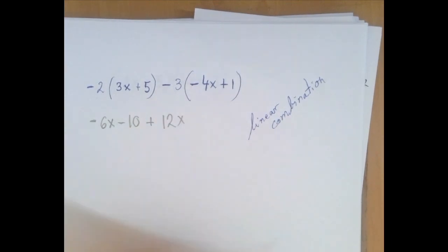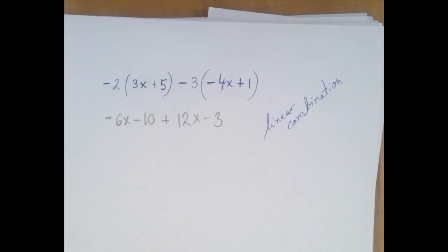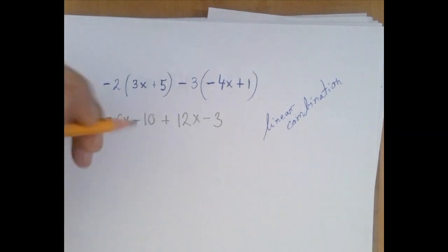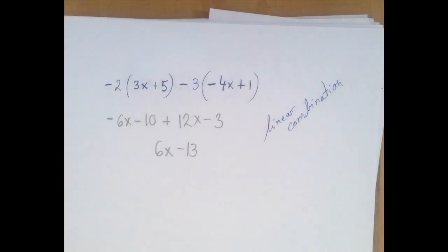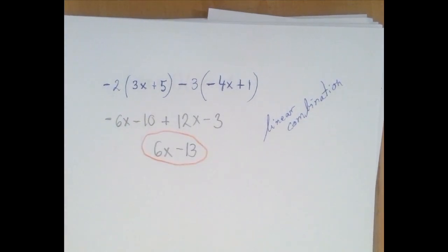And negative 3 times 1 is negative 3. And now we're going to combine like terms. Negative 6x plus 12x combines to 6x, and negative 10 minus 3 can be combined into negative 13. So the answer is 6x minus 13.